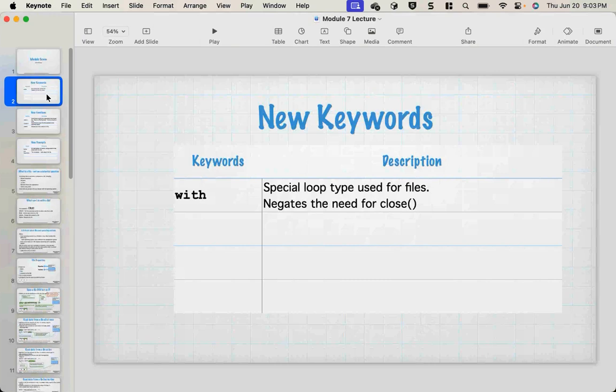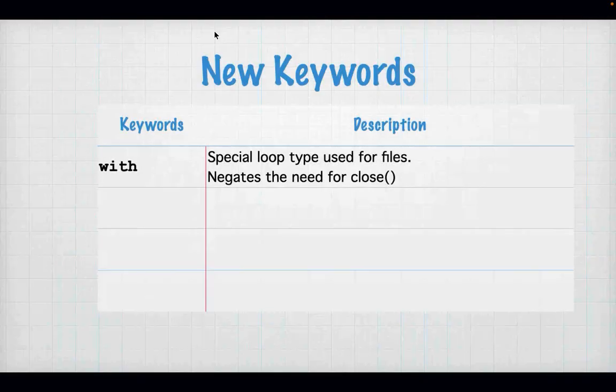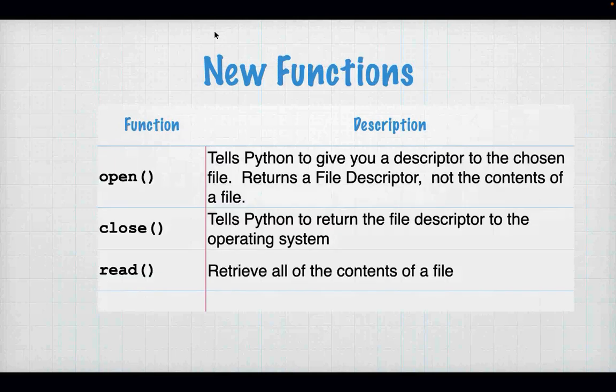Files open up a whole new world to computer programming. When you have the concept of a file and the ability to store things in a file, you can create things like electronic books, databases, and programs like Microsoft Word, which is itself a file. We're going to have a new keyword this week called 'with' — a special way of opening a file where you don't have to remember to close it.